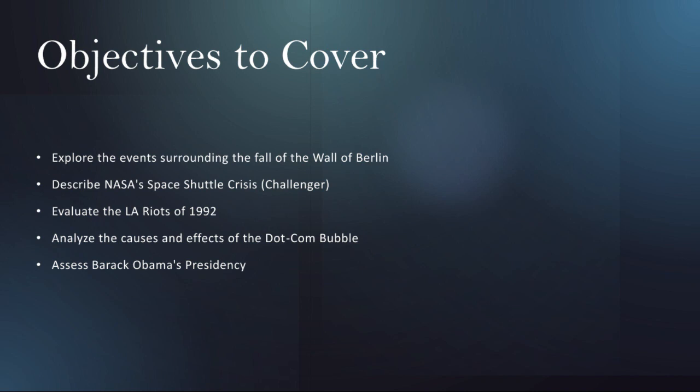Next, we'll go to Los Angeles, 1992, where simmering tensions erupted into violence during the LA riots, sparked by the acquittal of four police officers involved in the beating of Rodney King. The riots lasted six days, resulting in widespread looting, arson, and violence. The unrest exposed deep-seated racial and socioeconomic divides, prompting soul-searching and calls for reform in law enforcement and urban governance.